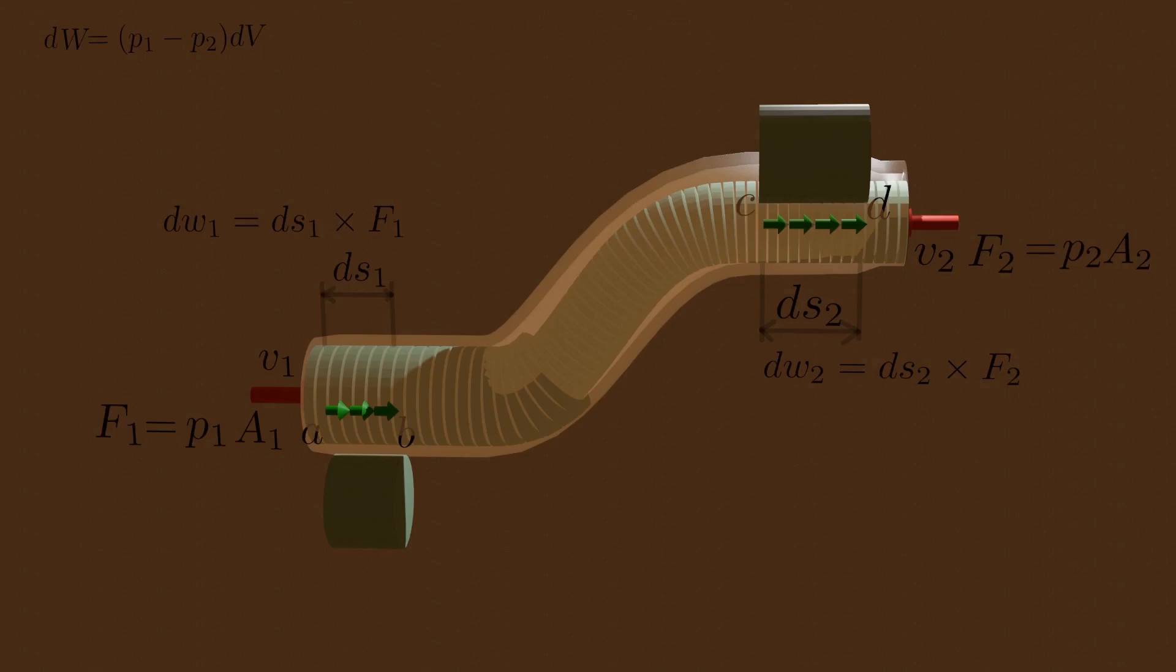At the beginning of DT, the fluid between A and B has kinetic energy. At the end of DT, the fluid between C and D has kinetic energy. The net change in kinetic energy during time DT is the difference between final value minus initial value.